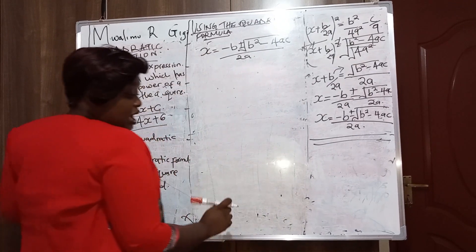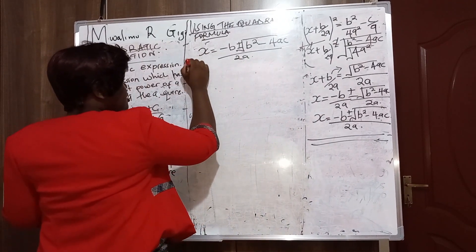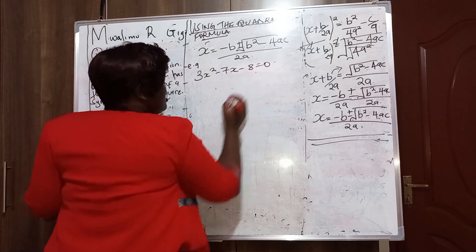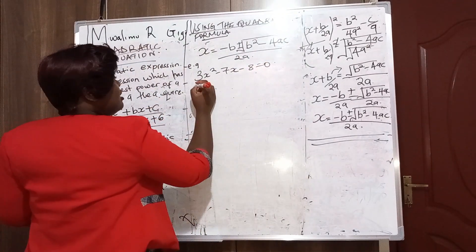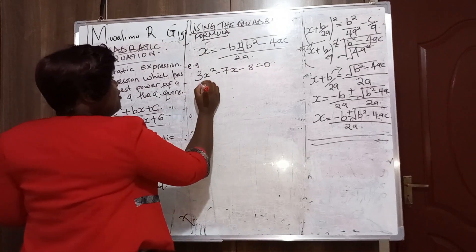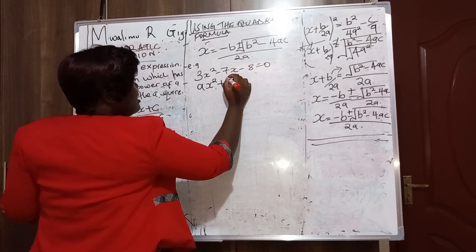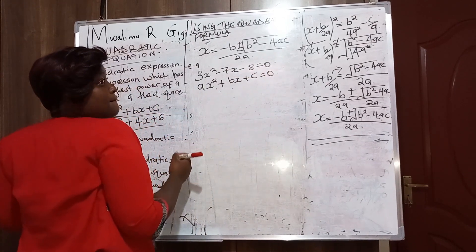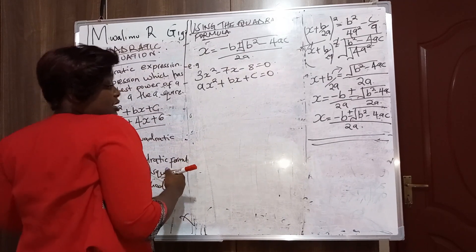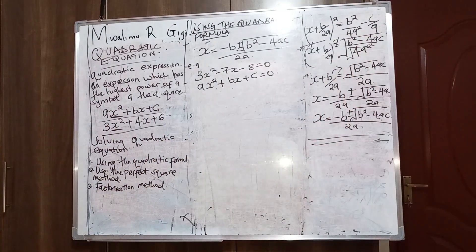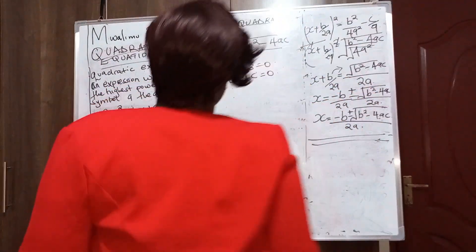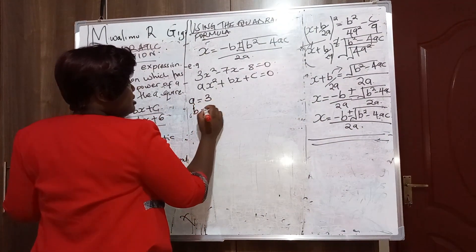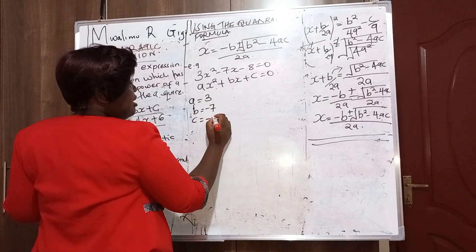For a quadratic equation, for example: 3x squared minus 7x minus 8 equals 0. Quadratic equations are in the form ax squared plus bx plus c equals 0. So for this equation, a equals 3, b equals negative 7, and c equals negative 8.